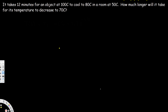Let's look at this problem. The question is asking: it takes 12 minutes for an object at 100 degrees Celsius to cool to 80 degrees Celsius in a room at 50 degrees Celsius. How much longer will it take for its temperature to decrease to 70 degrees Celsius?